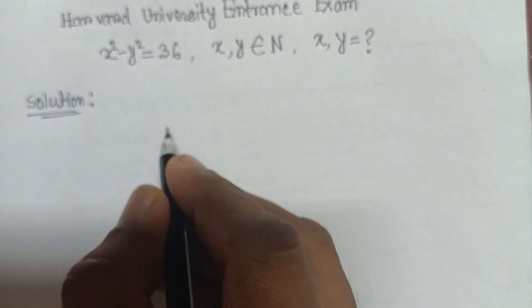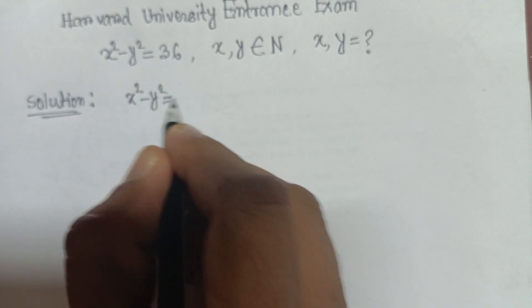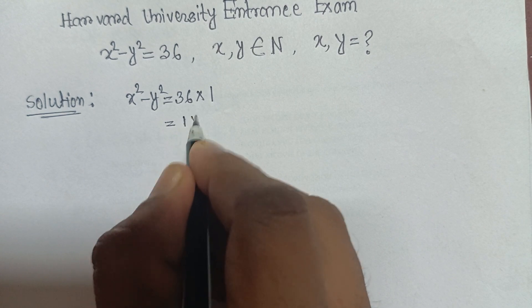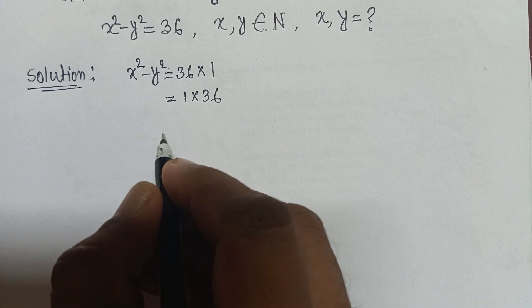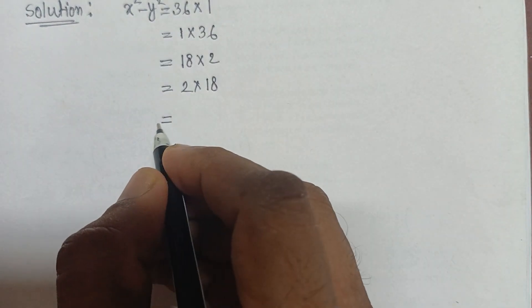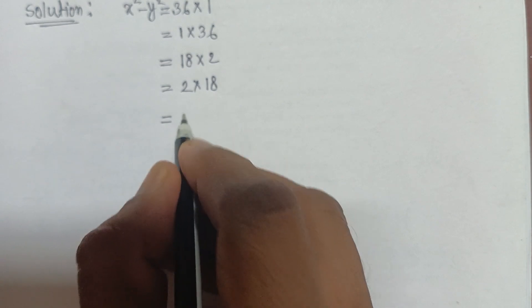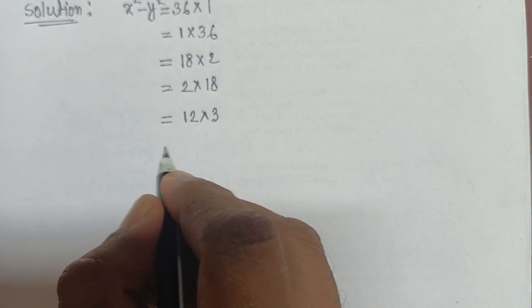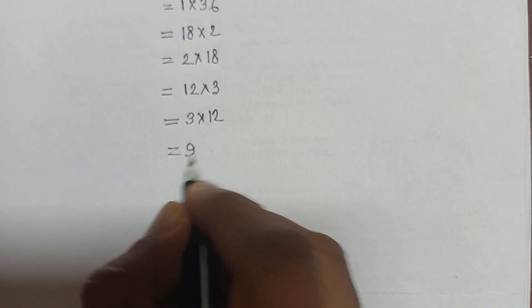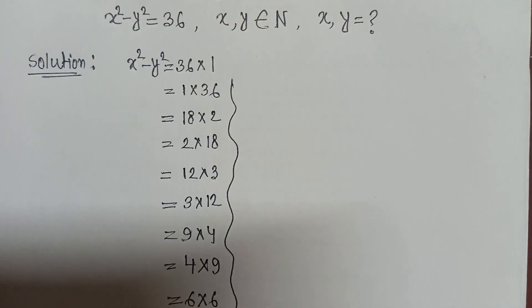We can break 36 into several factor pairs: 36 into 1, or 1 into 36, or 36 equals 18 times 2, or 2 times 18, or 12 times 3, or 3 times 12, or 9 times 4, or 4 times 9, or 6 times 6. These are the possible factor pairs of 36.